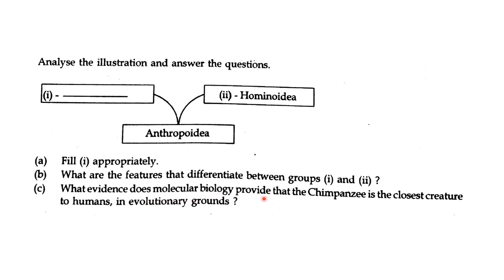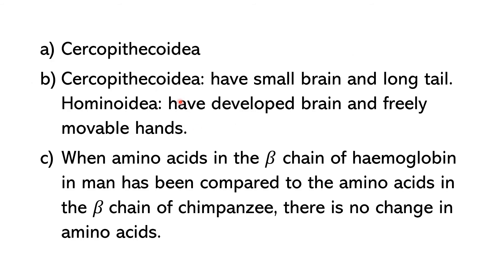What evidence does molecular biology provide that chimpanzees are the closest creature to humans on evolutionary grounds? The skeleton of the animal and the human beings is the same structure. Sarcopythecoids have a small brain and long tail, while Hominoids have a developed brain and freely movable hands.